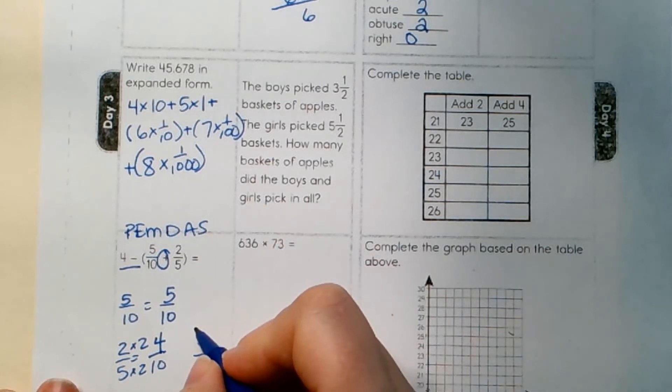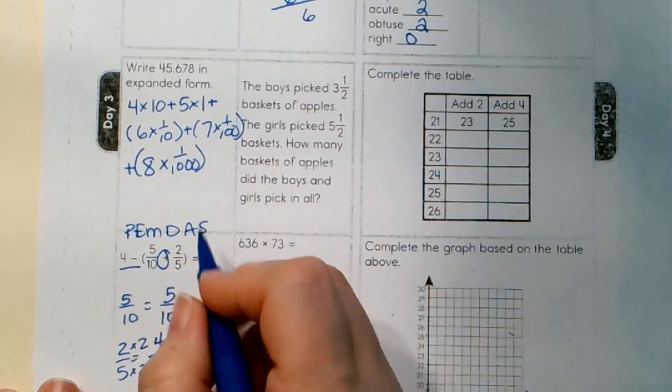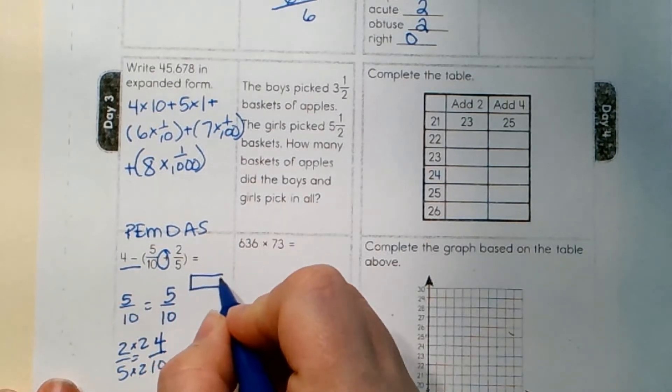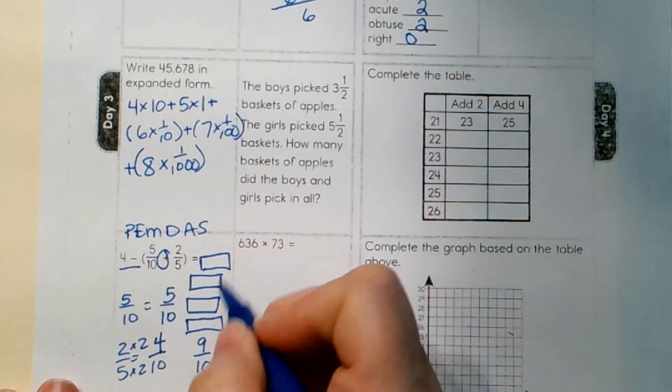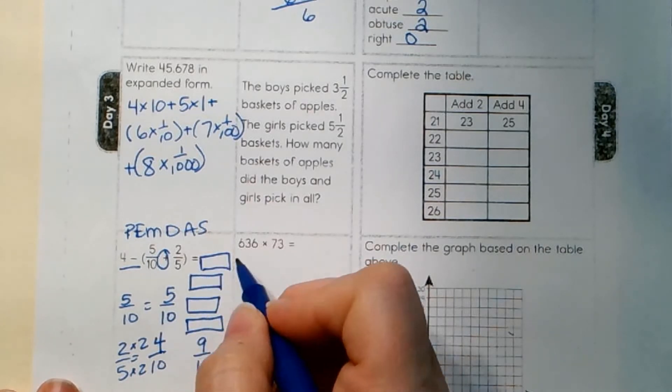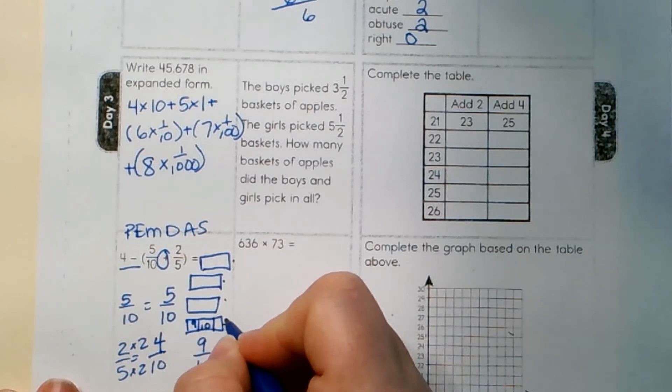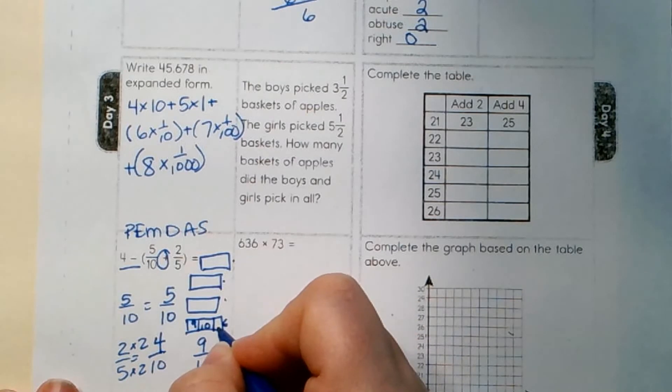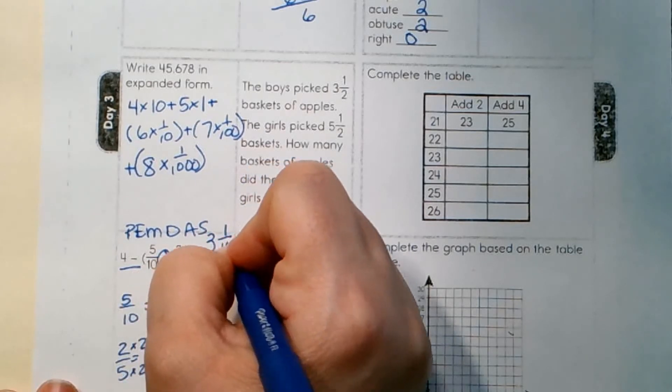So, in order to subtract 9 tenths from a whole number, let's draw a picture. 4. We're going to subtract out 9 tenths. We're not even subtracting out a whole. So, we know we're going to have 3 wholes. And then, how much are we going to have left? If we take out 9 tenths, we take out all of these, and how much do we have left? 1 tenth. So, we have 3 wholes and 1 tenth left over.